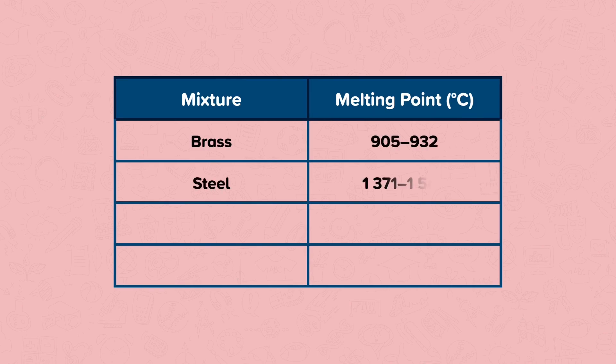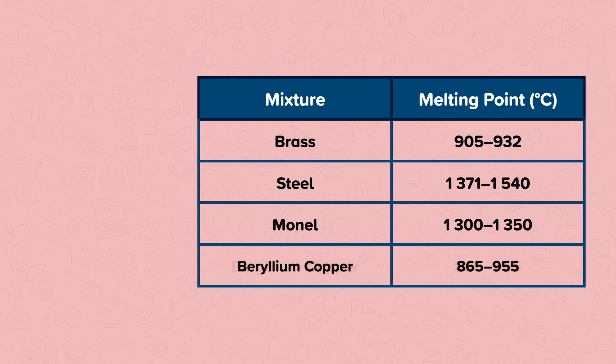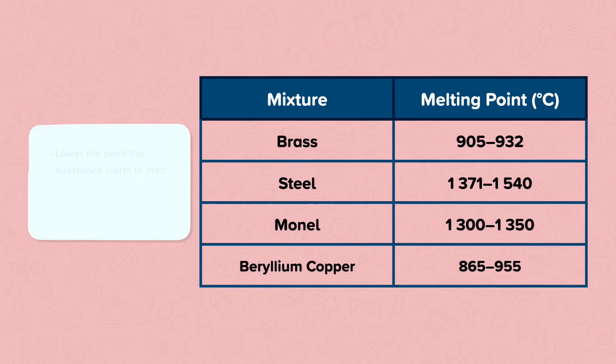Whereas if we look at impure substances, they will melt or boil over a range of temperatures. So what we see is that impurities will lower the point the substance starts to melt, and also raise the point the substance starts to boil.